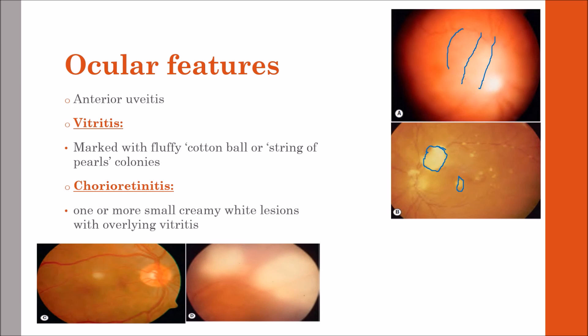Another type of presentation is chorioretinitis, showing one or more small creamy white lesions with overlying vitritis. As can be seen in the figure here, there is this focal area of chorioretinitis.